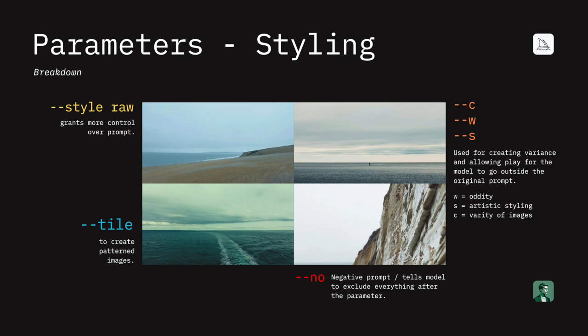Moving to styling — these are the different options for styling the image beyond what you put in the prompt. Style raw gives you more control and makes the output more adherent to your prompt. Tile creates patterned images. No is a negative prompt tool so you can specify what you do not want to see in the image. Then chaos, weird, and style — C, W, and S — all control the actual images. Chaos differentiates the images, giving variety in the results. Weird does odd things to the image. The style parameter controls how artistic the model is and how closely it adheres to the prompt; higher values mean less adherence, lower values mean more adherence but less artistic style.